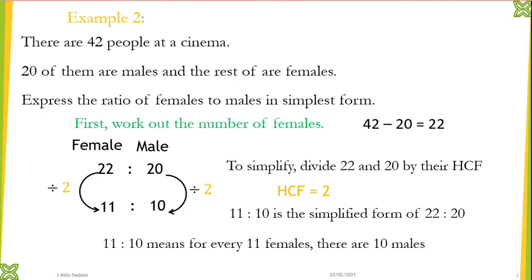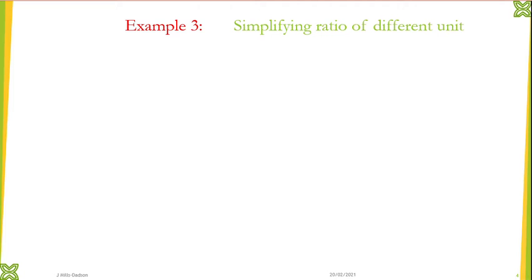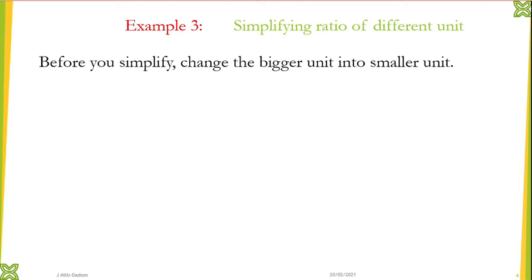Now let's look at where we have ratio with different units. When simplifying ratios of different units, one important thing to remember is that before you simplify you need to change the bigger unit into a smaller unit. It's easier to change bigger into smaller units to avoid decimals. For example, we need to simplify 30 millimeters to 2 centimeters.